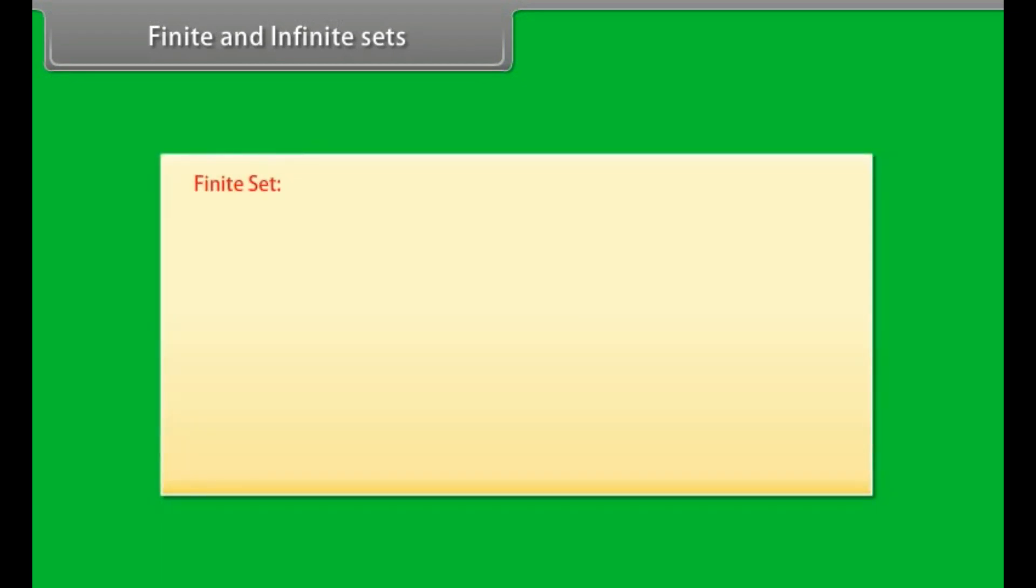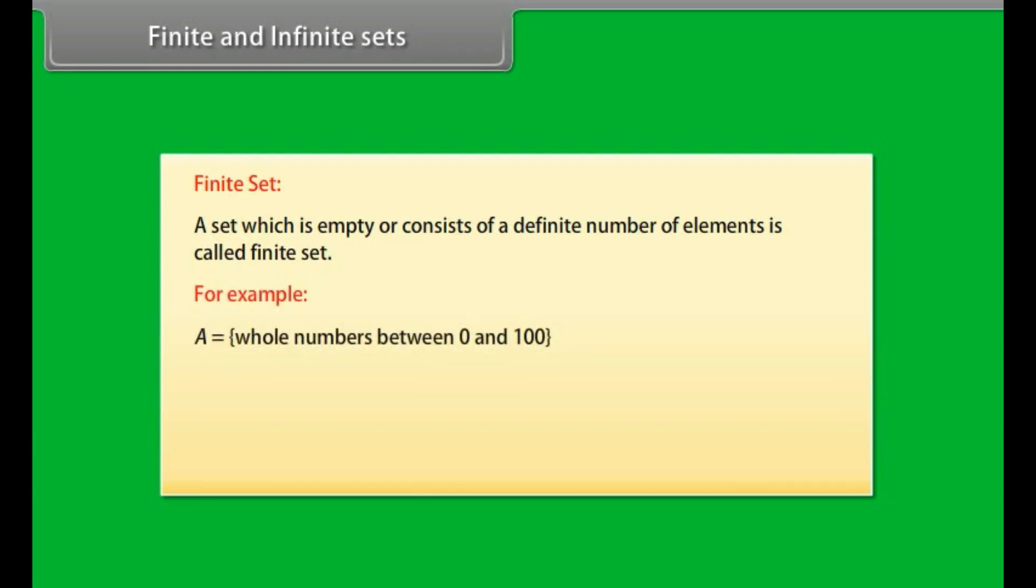Finite and infinite sets. Finite set: A set which is empty or consists of a definite number of elements is called finite set. For example, A equals whole numbers between 0 and 100, B equals primary colors, C equals prime numbers less than 12 are the finite sets.